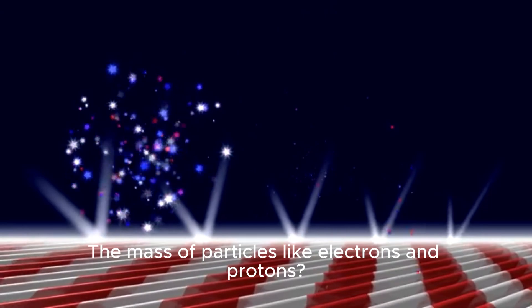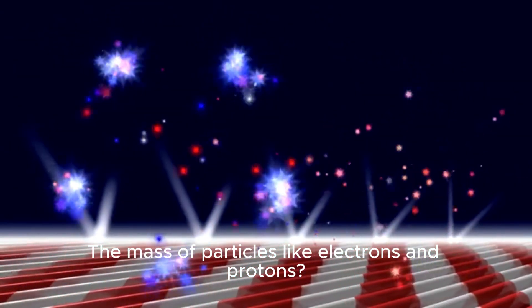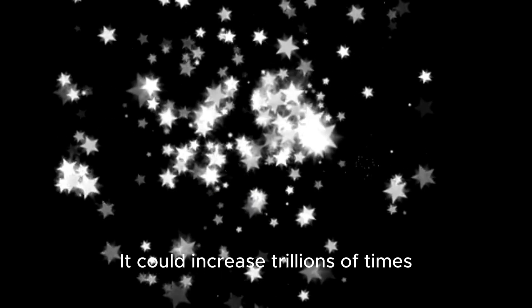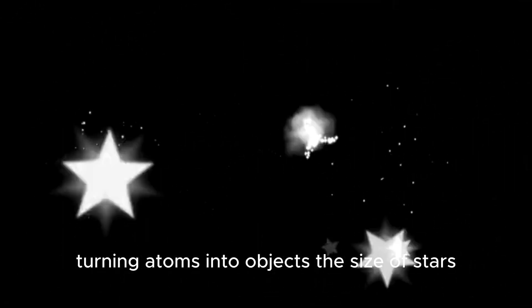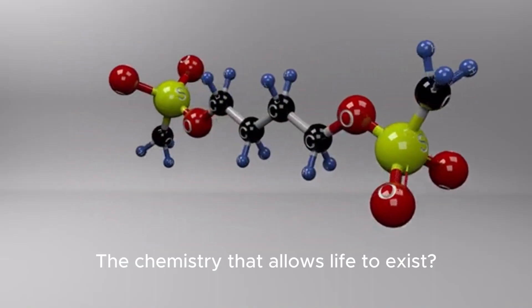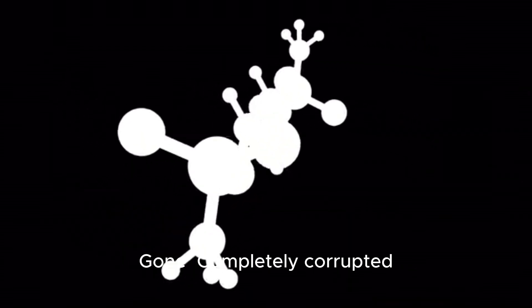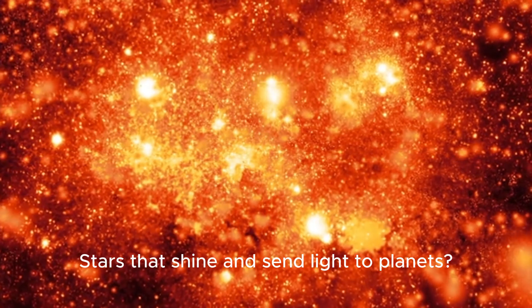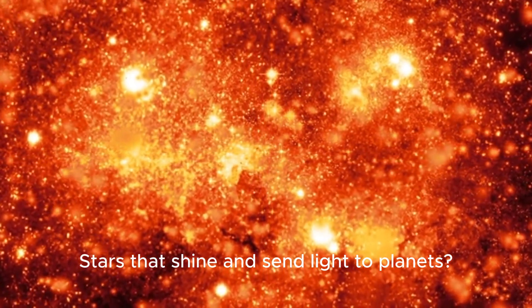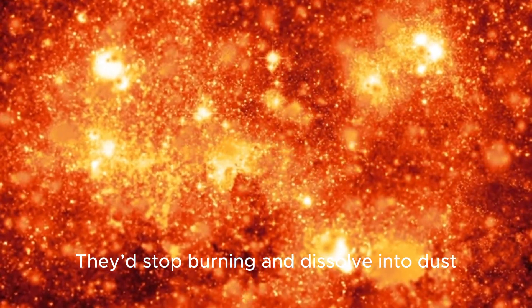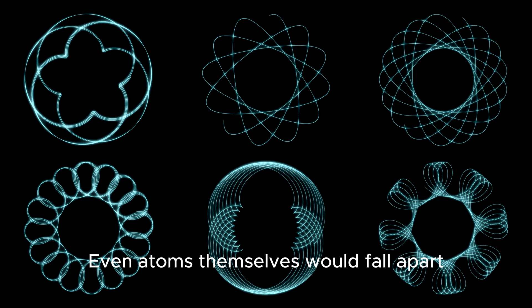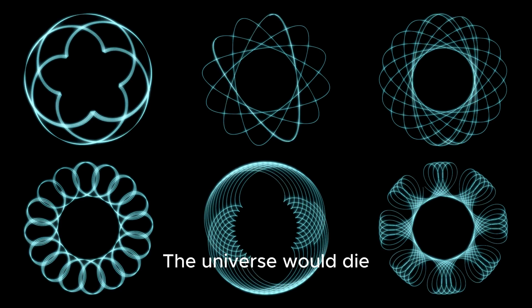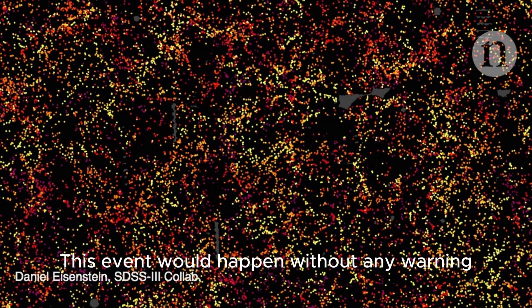The mass of particles like electrons and protons could increase trillions of times, turning atoms into objects the size of stars. The chemistry that allows life to exist - gone, completely corrupted. Stars that shine and send light to planets would stop burning and dissolve into dust. Even atoms themselves would fall apart. Life would end. The universe would die. And the most chilling part - this event would happen without any warning.